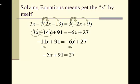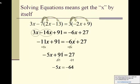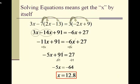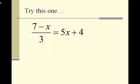Next step is to subtract 91 over to the right side. This cancels it from the left side, and we have negative 5x equals negative 64. Last step: divide by negative 5, and x equals 12.8. If you prefer fractions, you can convert this to 64 over 5. Try this next one — pause the video and we'll go over it when you're ready.